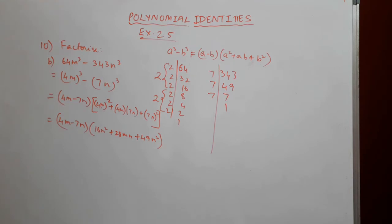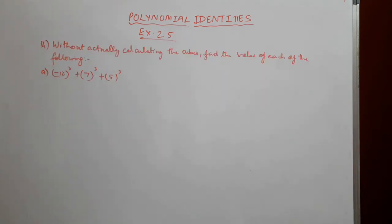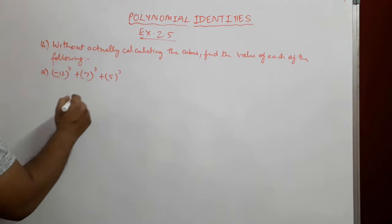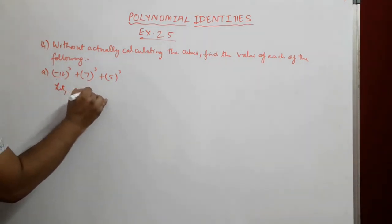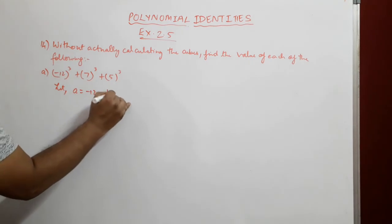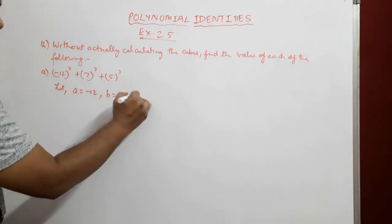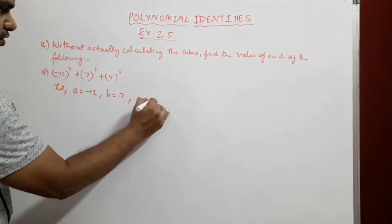Let's move to Question 14. Question 14 says: without actually calculating the cubes, find the value of each of the following. The first problem is (-12)³ + 7³ + 5³. We let a = -12, b = 7, and c = 5.